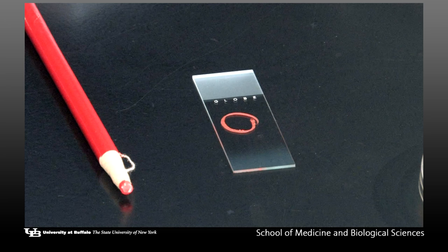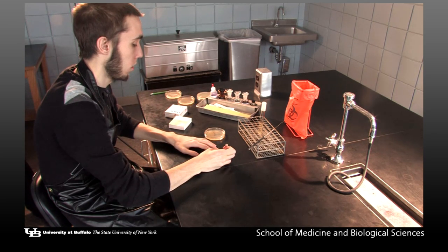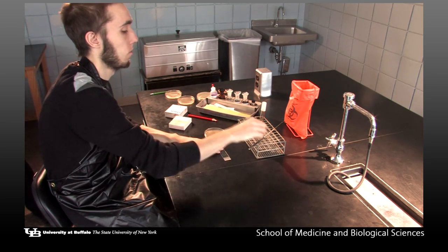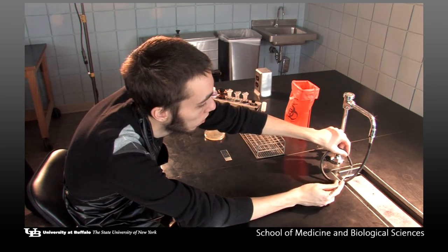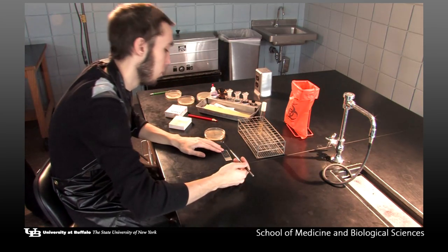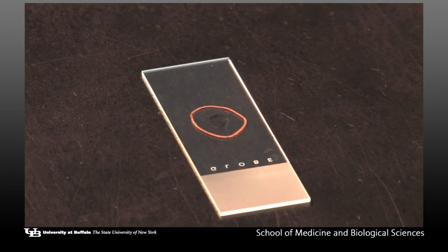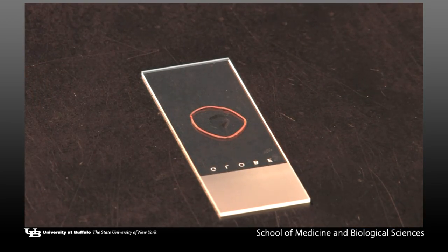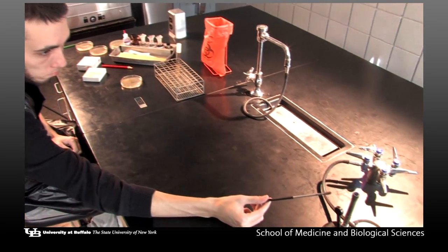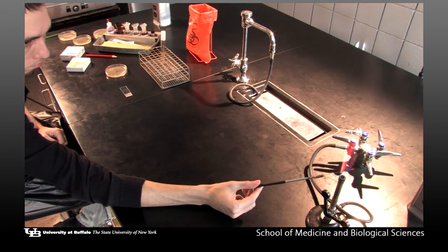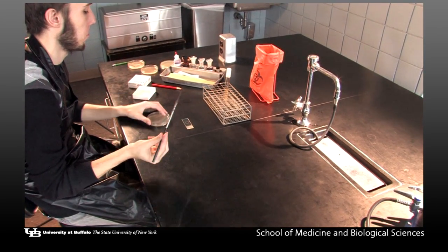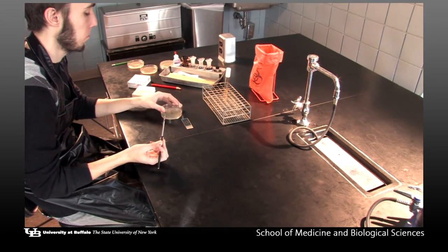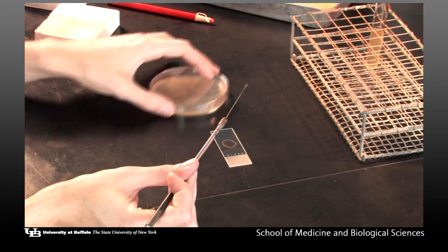Using your china marker, which may also be called a wax pencil, draw a ring on a clean slide. Place one loopful of tap water in the center of the ring. Sterilize the inoculating loop. Prepare a film of the colony by lightly touching a well-isolated colony. Mix the colony material in the inoculating loop with the water on the slide.